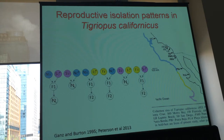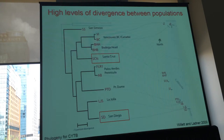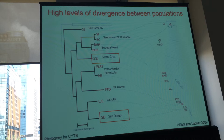This suggests that if you don't have sex chromosomes, mitonuclear incompatibilities or other forms of uniparentally inherited factors are actually important for giving rise to F1 hybrid sterility or inviability. These copepods inhabit splash pools and are found from Baja, Mexico all the way to Alaska. Populations are very segregated with a lot of genetic divergence between geographically closely related populations. This is a mitochondrial DNA tree — divergence as high as 20% for nearby populations. In this talk I'm focusing on a cross between the San Diego and Santa Cruz populations, about 20% divergence in mitochondrial DNA and about 6% synonymous substitution rate.